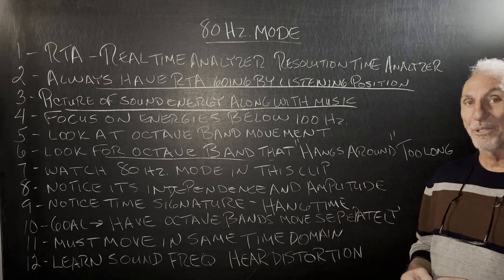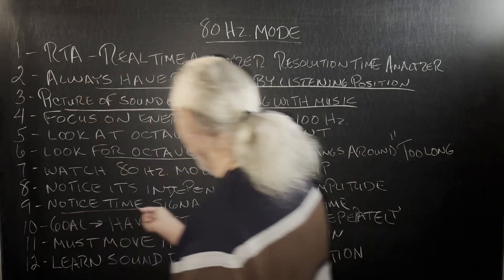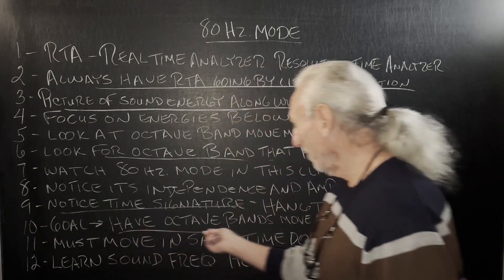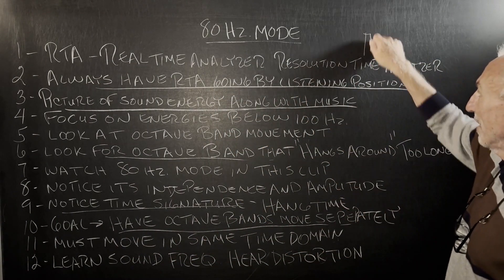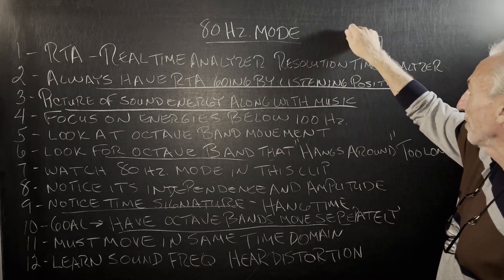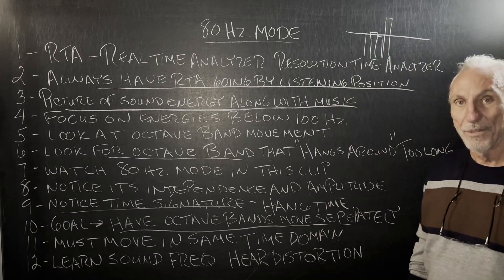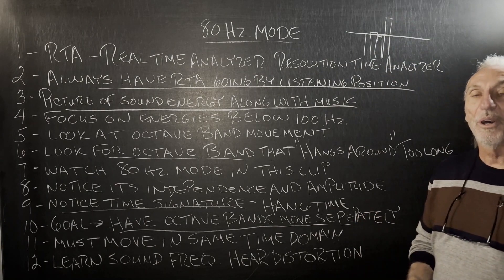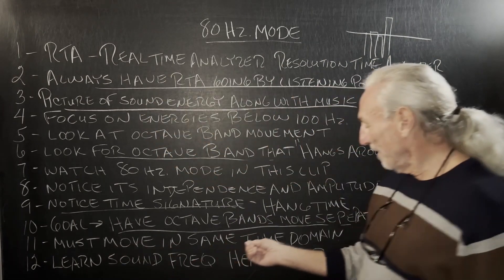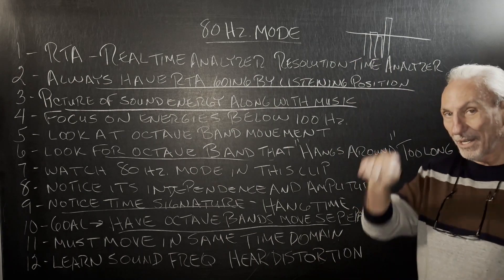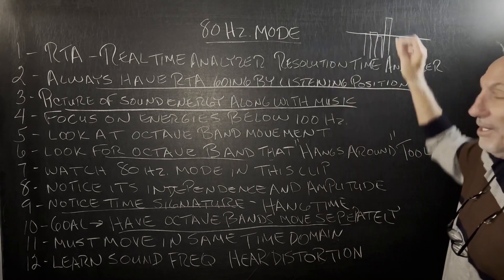That's a mode — unwanted pressure, that's distortion. That's what room modes look like: there's the visual representation of an 80 hertz room mode. Notice the time signal — it hangs out too long. Our goal is to have the octave bands move independently but stay in roughly the same relative amplitude. We don't want one way up high. If it's hanging around too long, it's a mode, and we need everything in the same time domain.